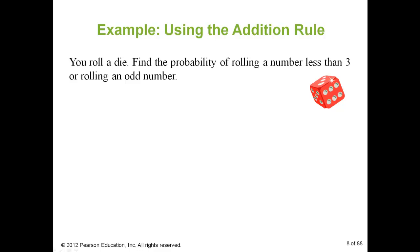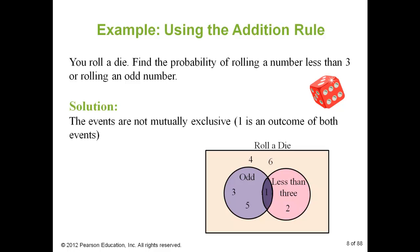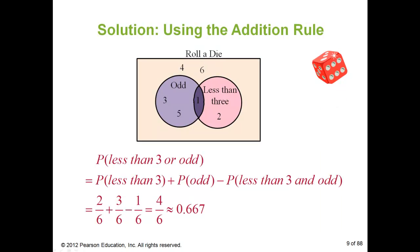In the second example, I'm going to roll a die and find the probability of rolling a number less than 3 or rolling an odd number. These are not mutually exclusive. Odd numbers are 1, 3, and 5; numbers less than 3 are 1 and 2. The probability of the first event is 2 out of 6, the second is 3 out of 6, and I subtract the probability of both happening, which is 1 out of 6. The final probability is 4 out of 6, or 0.667.